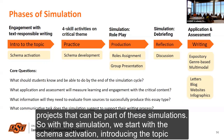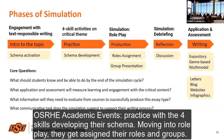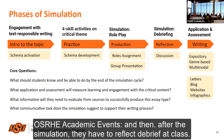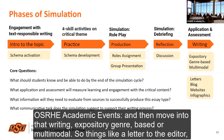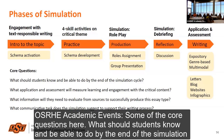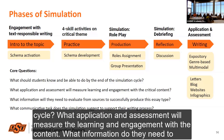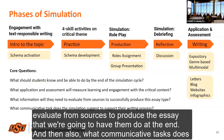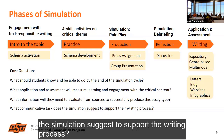With the simulation, we start with schema activation, introducing the topic, practice with the four skills, developing their schema, moving into role play where they get assigned their roles and groups. After the simulation, they have to reflect, debrief as a class, and then move into writing — expository, genre-based, or multimodal — things like a letter to the editor, a blog, a website, or an infographic. Core questions include: what should students know and be able to do by the end of the simulation cycle? What application and assessment will measure learning? What information do they need from sources? And what communicative tasks does the simulation suggest to support the writing process?